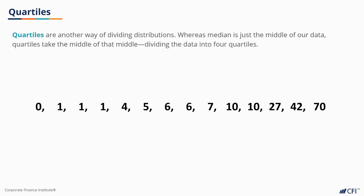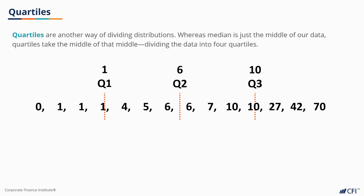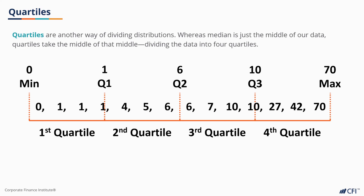Quartiles are another way of dividing distributions. Whereas median is just the middle of our data, quartiles take the middles of that middle, dividing our data set into four quarters. This method is popular with economists, who use quartiles to study policy effects at different income levels. By looking at changes in income across the first, second, third, and fourth quartiles, they can provide a more nuanced picture of a changing economy, which speaks to the experiences at each quartile.